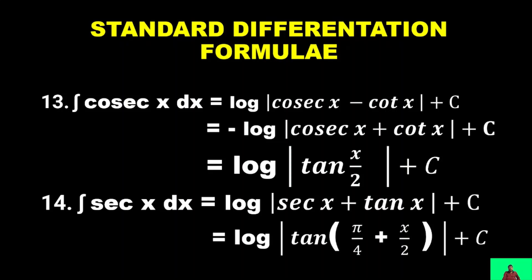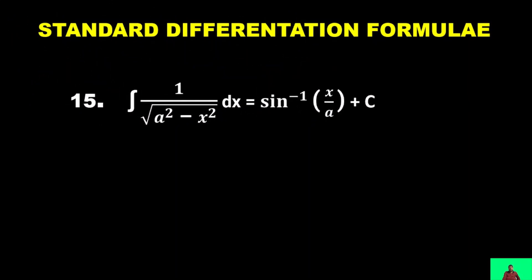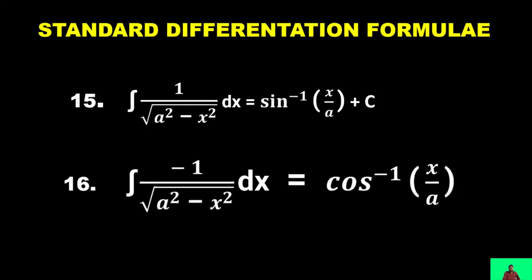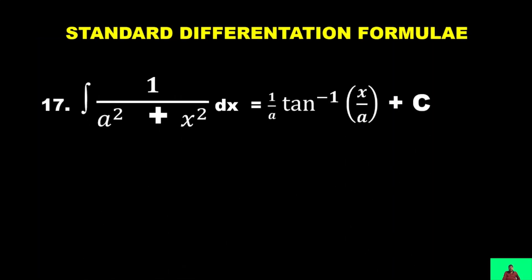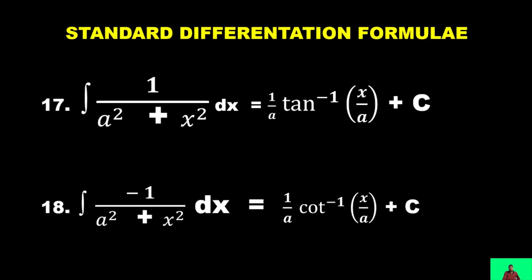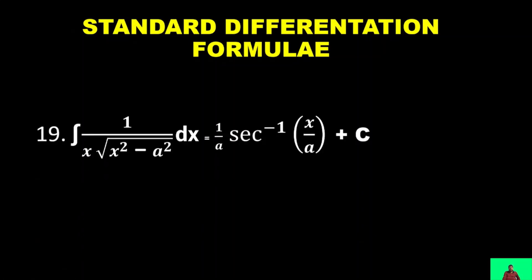∫1/√(a² − x²) dx = sin⁻¹(x/a) + C, or equivalently −cos⁻¹(x/a) + C. ∫1/(x² + a²) dx = (1/a) tan⁻¹(x/a) + C. ∫1/(x√(x² − a²)) dx = (1/a) sec⁻¹(x/a) + C.